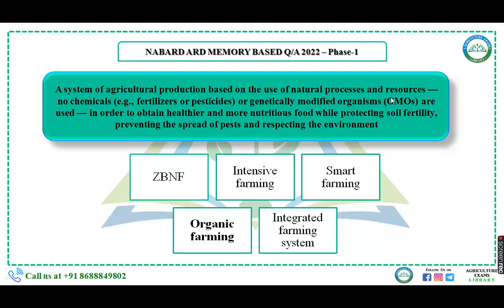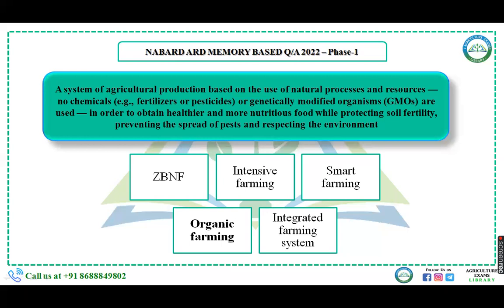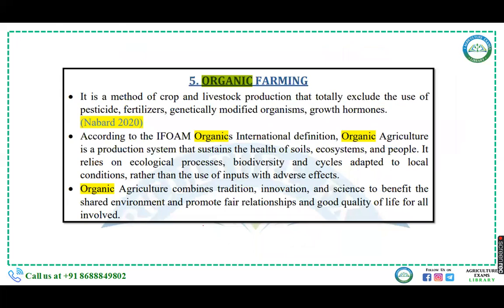The first question describes a system of agriculture production based on the use of natural processes and resources where no chemicals — that is fertilizers, pesticides, or genetically modified organisms — are used, in order to obtain healthier and more nutritious food while protecting soil fertility, preventing the spread of waste, and respecting the environment. The answer is organic farming, where use of pesticides and fertilizers is totally excluded.